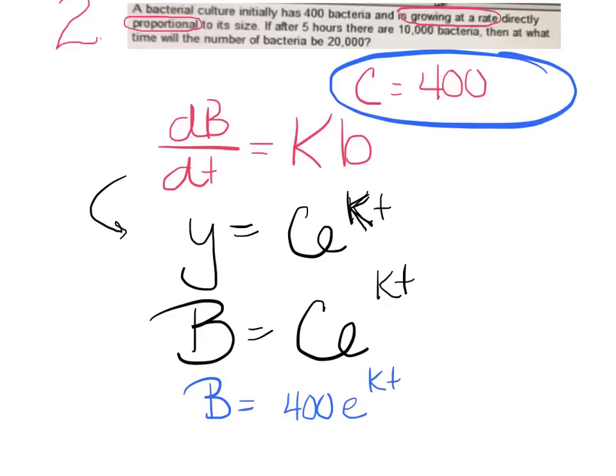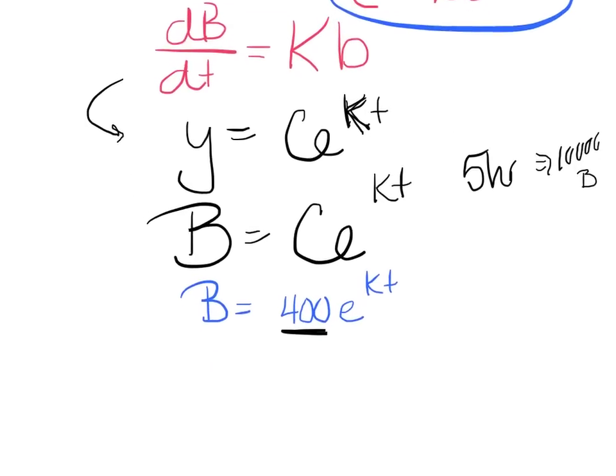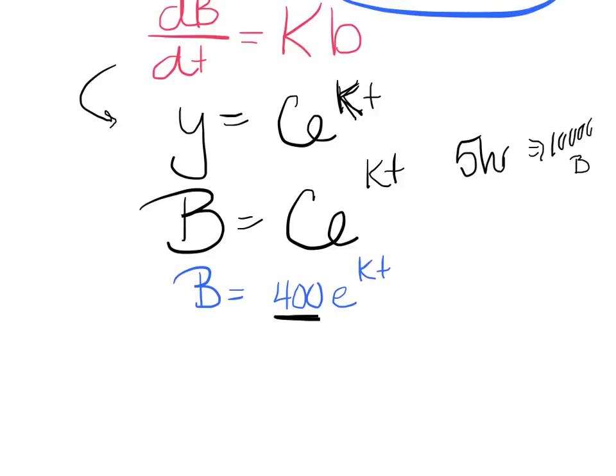Now what values go together? It says after five hours, there are 10,000 bacteria. So five hours, I've got 10,000 bacteria. You can't change that c value. That is a constant. That is the initial amount we're starting with. So I know that my bacteria is 10,000, specifically when I plug in a 5 for the time.